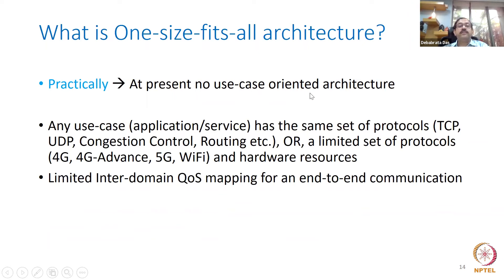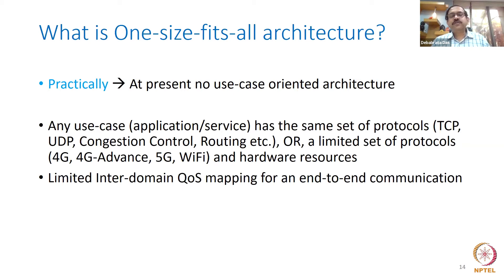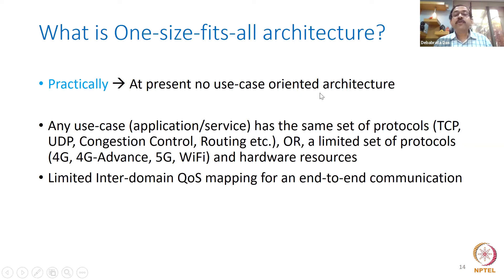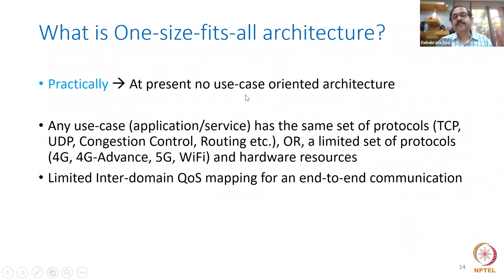What is the one-size-fits-all architecture practically at present? Look at your home — doing video conference, voice call, video games, email, browsing — all on the same Wi-Fi or 4G/5G base station, using the same protocol for everything. Practically, at present, there is no use-case-oriented architecture. The protocol doesn't change with respect to your requirements. When I send email and a thousand millisecond delay is acceptable, the protocol remains the same as when I'm doing a video conference where only 150 milliseconds is acceptable.